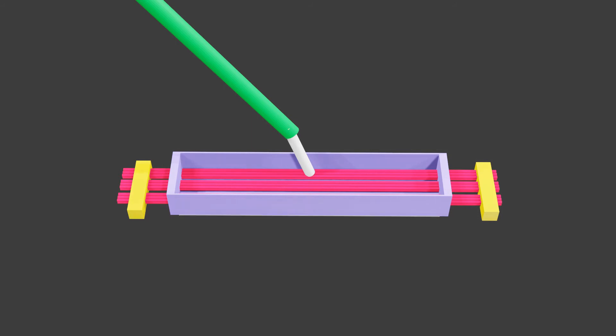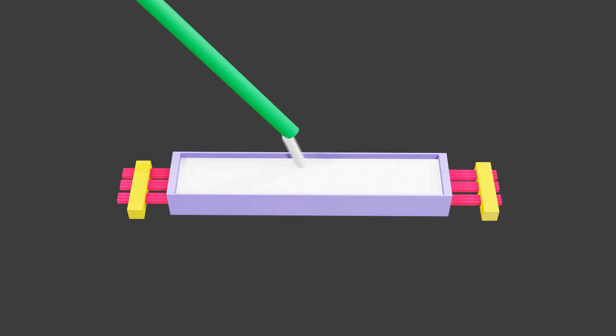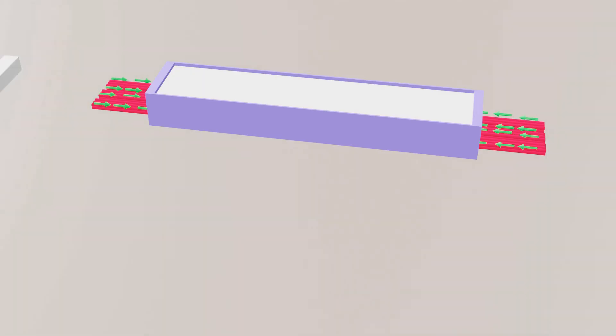When concrete achieves its characteristic strength, then the grip of steel wires are removed. As we remove the wire grip, it tries to compress the concrete, which produces compressive stress in the bottom of beam.